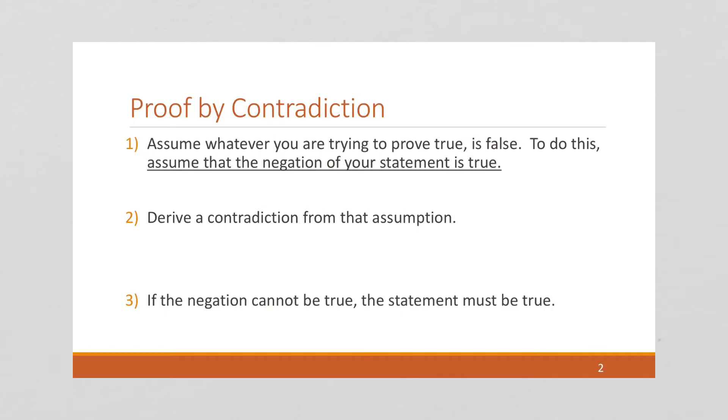Before we do so, let's review the steps for doing a proof by contradiction. The first step is to assume that the negation of your statement is true.